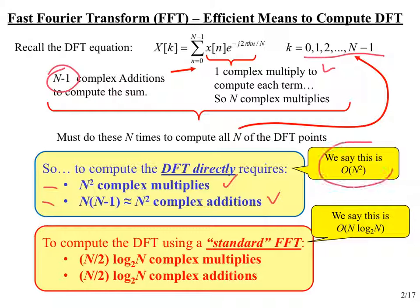This is what computer scientists call big-O N squared, or order N squared. We would say that the direct DFT computation is order N squared in complexity. That means if we double the number of data points, the amount of complexity will quadruple.